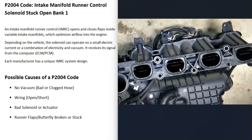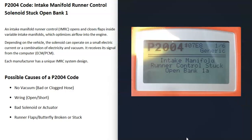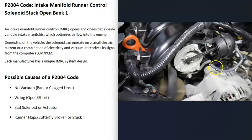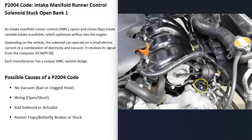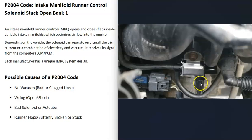When you get a P2004 code, the computer is seeing that these flaps are stuck open, so you'll need to troubleshoot why. The first possible cause is the vacuum line going to the solenoid — if your solenoid is vacuum controlled and there's no vacuum at the hose, it could be clogged, or it could have a bad one-directional valve or something like that.